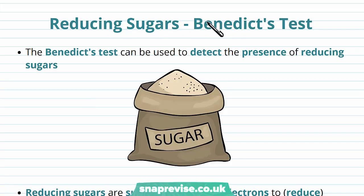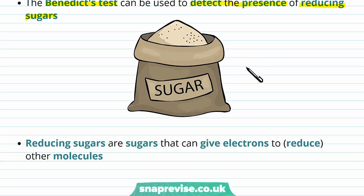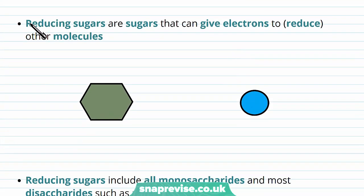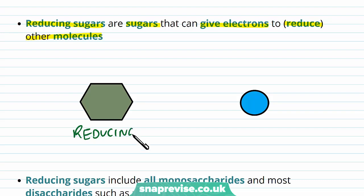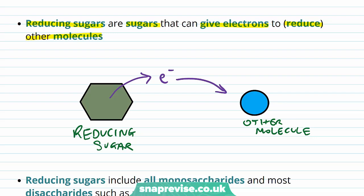The first chemical test we need to be aware of is the Benedict's test, which is a procedure used to detect the presence of reducing sugars. Reducing sugars are a particular type of sugar, therefore a type of carbohydrate. A reducing sugar — the clue is in the name — is a sugar which can give away electrons to reduce other molecules. If it is a reducing sugar, it's able to give away electrons to something else, and in doing so, that other molecule accepts the electron and becomes reduced. That's why we call them reducing sugars, because they reduce other molecules.